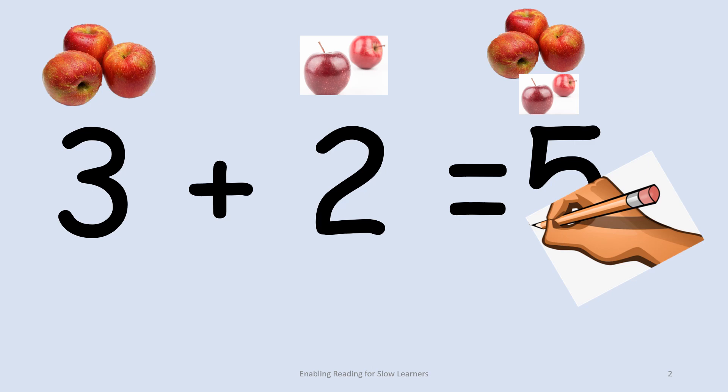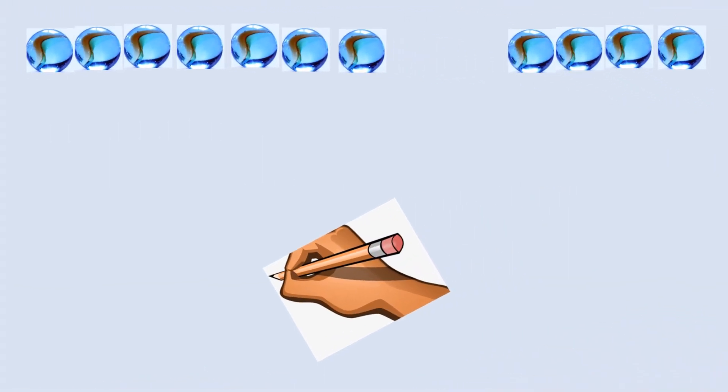2. Subtraction: The Taking Away Operation. Subtraction is the opposite of addition and helps us find the difference between two numbers or take away a group from another. Imagine you have seven marbles, and you give your friend three. How many marbles do you have left?